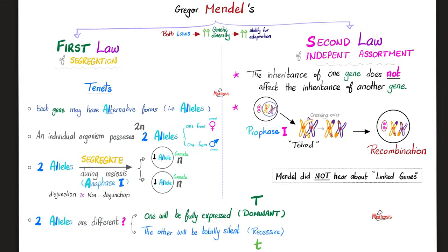Gregor Mendel's Law. First law, also known as the law of segregation. Each gene may have alternative forms — the alternative is the allele. One allele from mommy, one from daddy.